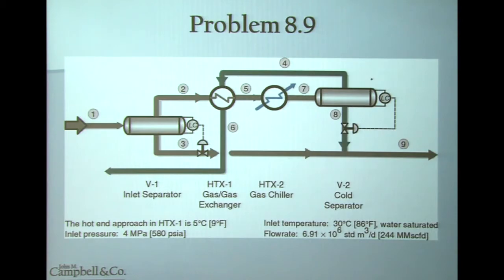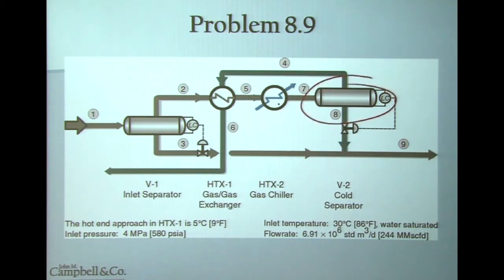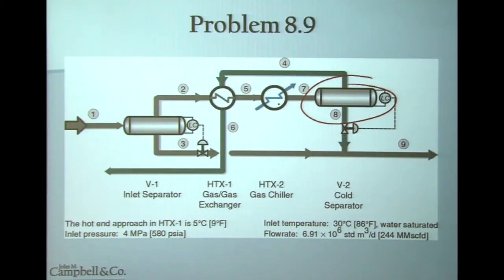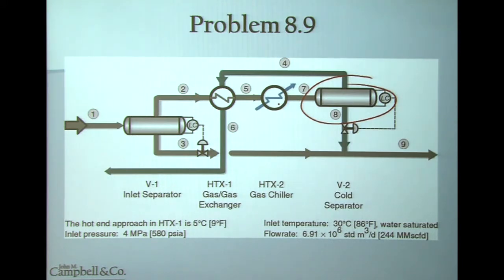We end up in a cold separator where we again separate the liquid from the vapor by undergoing a flash operation. We take the cold vapor, stream number 4, and cross-exchange it with the feed gas, stream number 2. Stream number 6 is the sales gas that leaves the system and meets our hydrocarbon dew point specification.